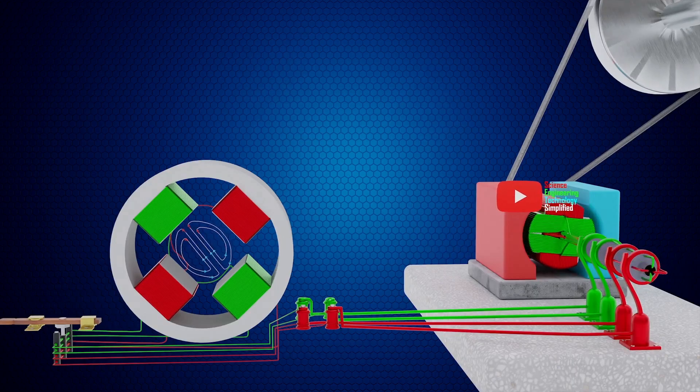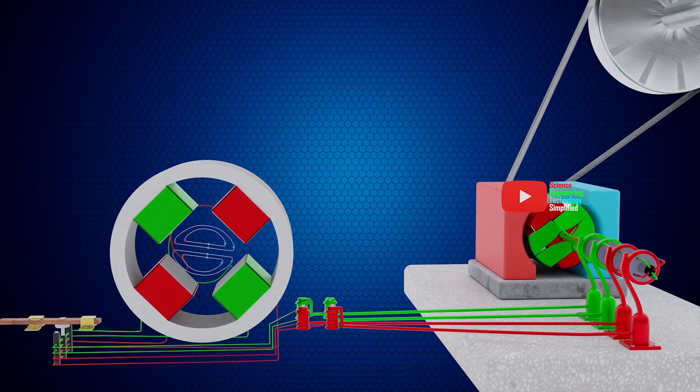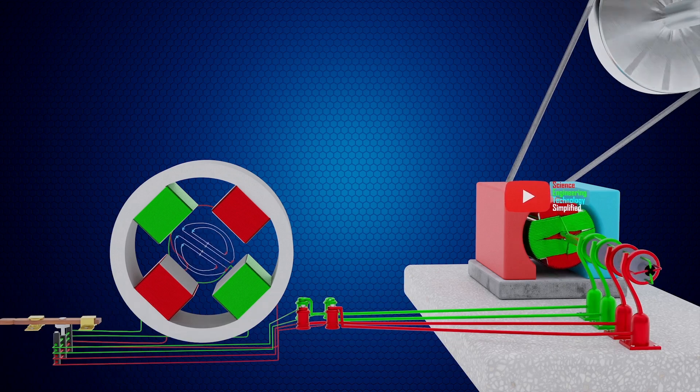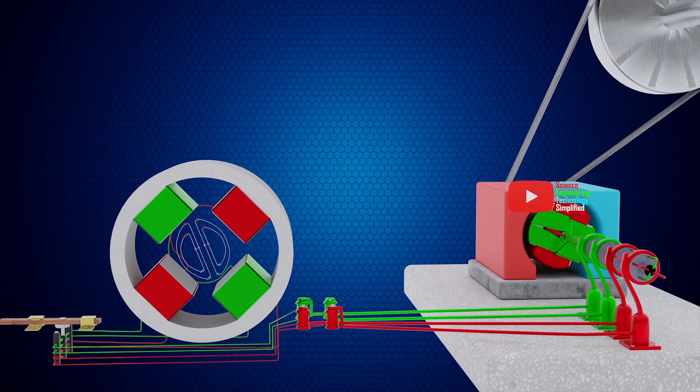Thus, as the coils of the generator rotate, the corresponding resultant magnetic fields generated in the field magnets of the motor also rotate.